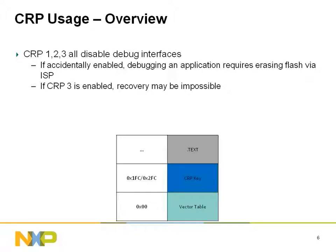The next few slides will illustrate the recommended way of developing a project on parts with CRP features. Even if you don't intend to use CRP in your application, without properly ensuring that CRP is disabled, you may inadvertently find that debugging has been disabled. The general strategy will be to control the linker to ensure that the desired keyword is placed to the CRP memory address in flash.